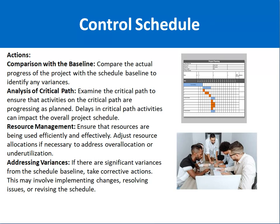Key actions during the Control Schedule process include comparison with the baseline — comparing what was decided in the planning phase against actual progress. Analysis of the critical path ensures that activities on the longest-duration path are progressing as planned, since any delay on the critical path will delay the overall project. Resource management ensures resources are used efficiently, adjusting allocation to address over-allocation or under-utilization. Addressing variances means analyzing planned versus actual — for example, if a task was planned for 10 days but took 15 days, there is a five-day delay.